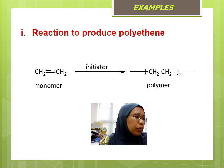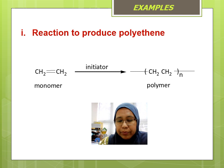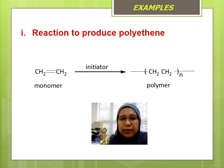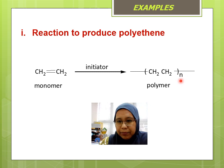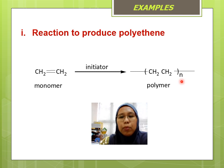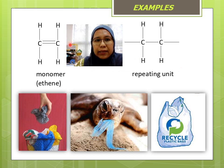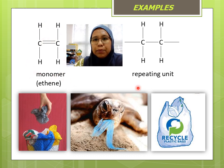Let's turn to your book page 208. The first example is the reaction to produce polyethene. As the name of the polymer is polyethene, we know the reactant is ethene. Using the initiator as catalyst, we form CH₂CH₂ inside a bracket, together with a bond before and after, and N representing the number of monomers. Here is the monomer for polyethene, which is ethene, and the repeating unit.